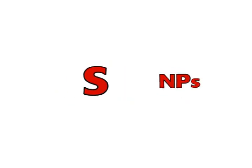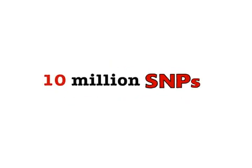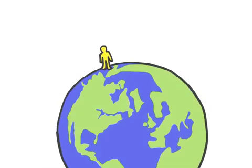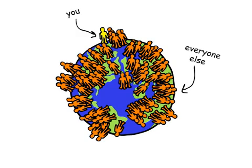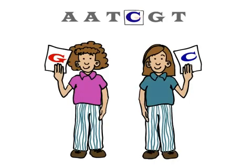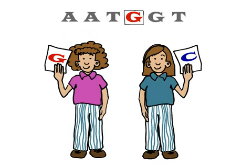There are around 10 million SNPs in the human genome, which account for many of the genetic differences between you and everyone else on the planet. Some SNPs account for differences in appearance. Others can affect how we develop diseases or respond to drugs.